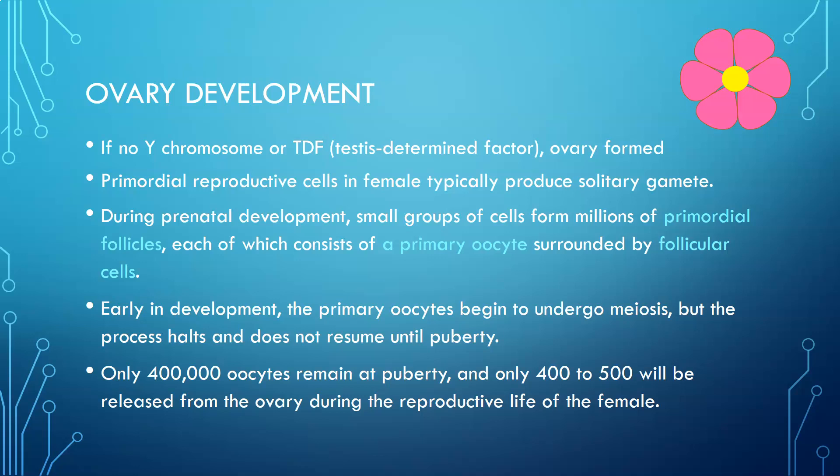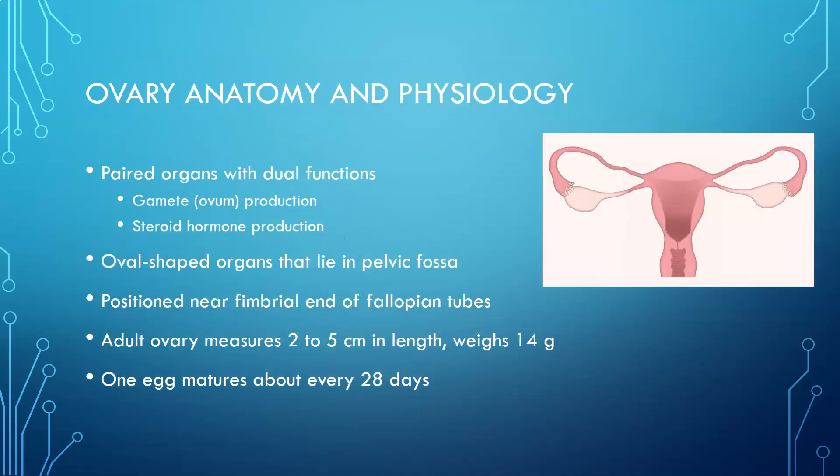Only about 400,000 oocytes will remain at puberty, when it started out with millions in utero, and only 400 to 500 will be released from the ovary during the reproductive life of a female, considering average lifespan. Now let's talk a little bit about ovary anatomy and physiology.